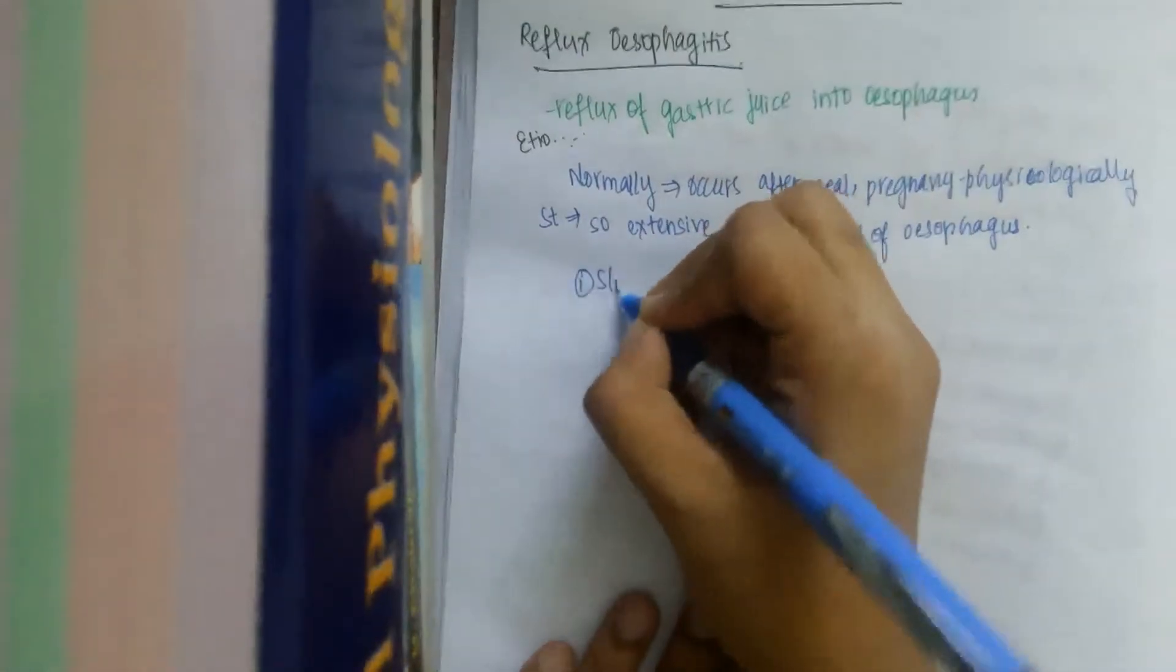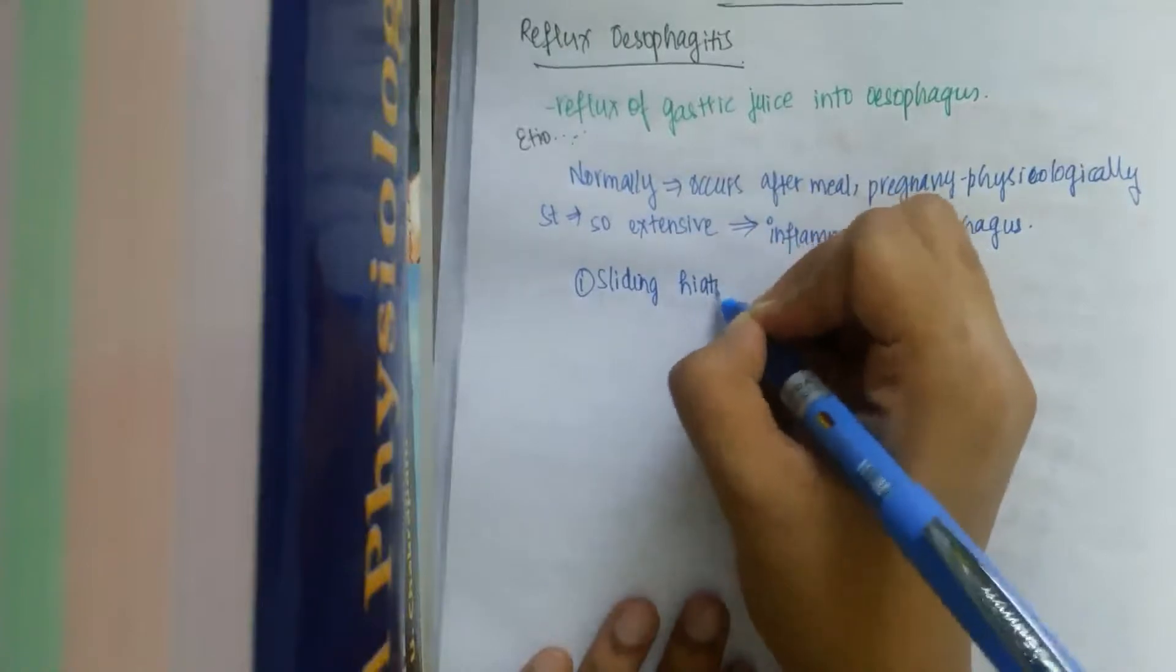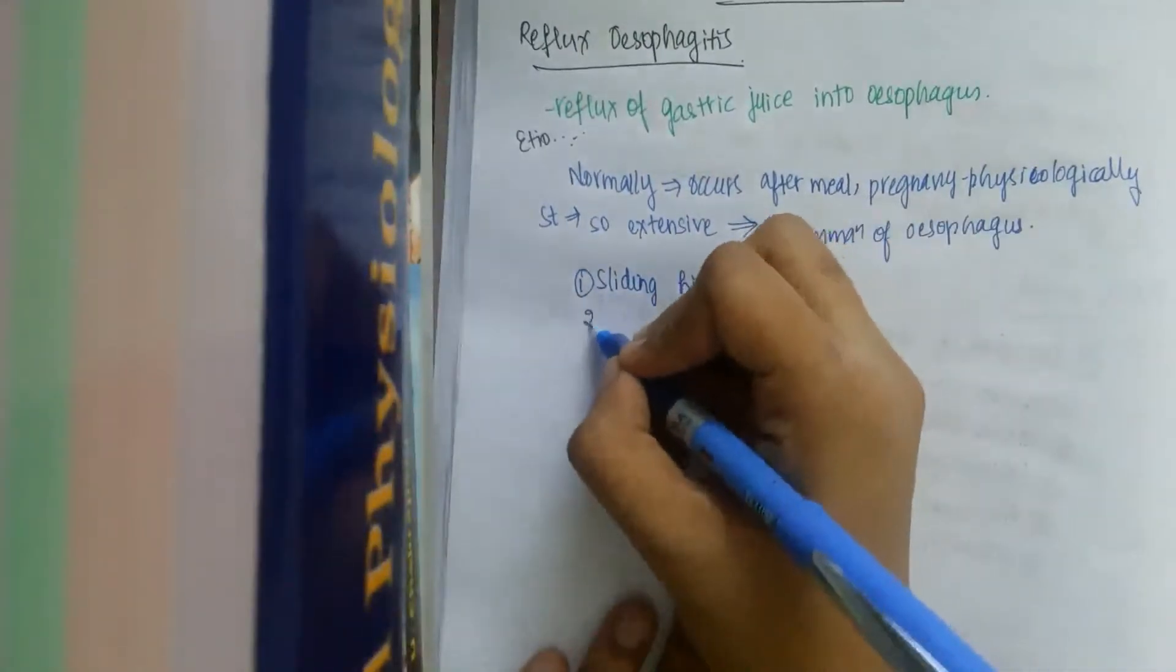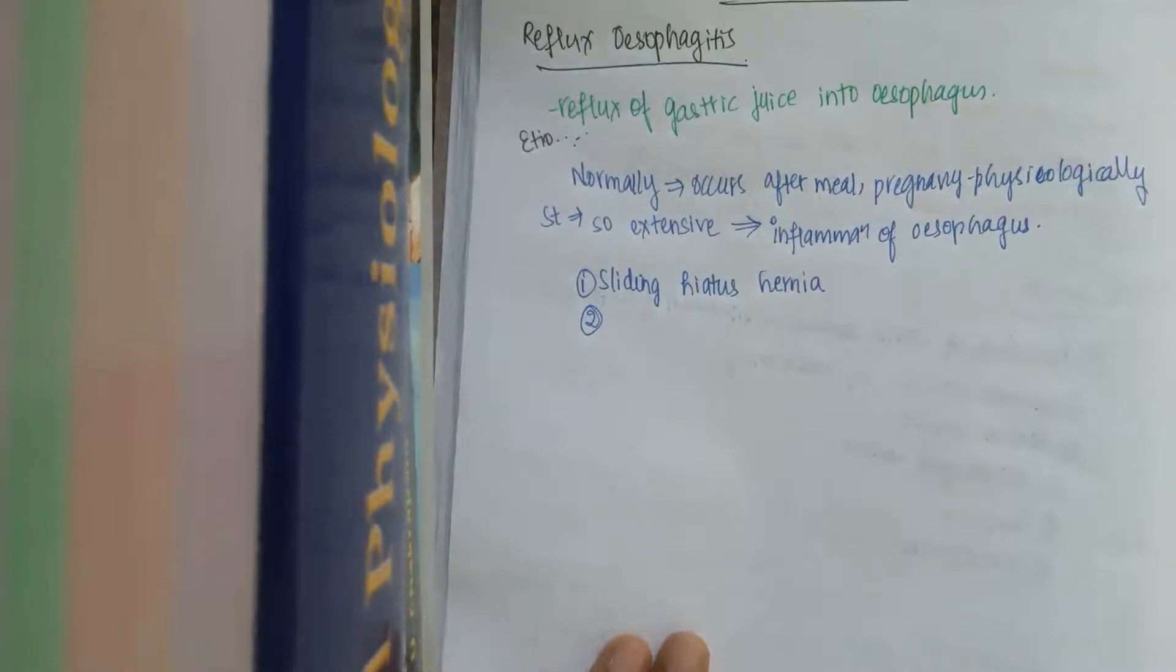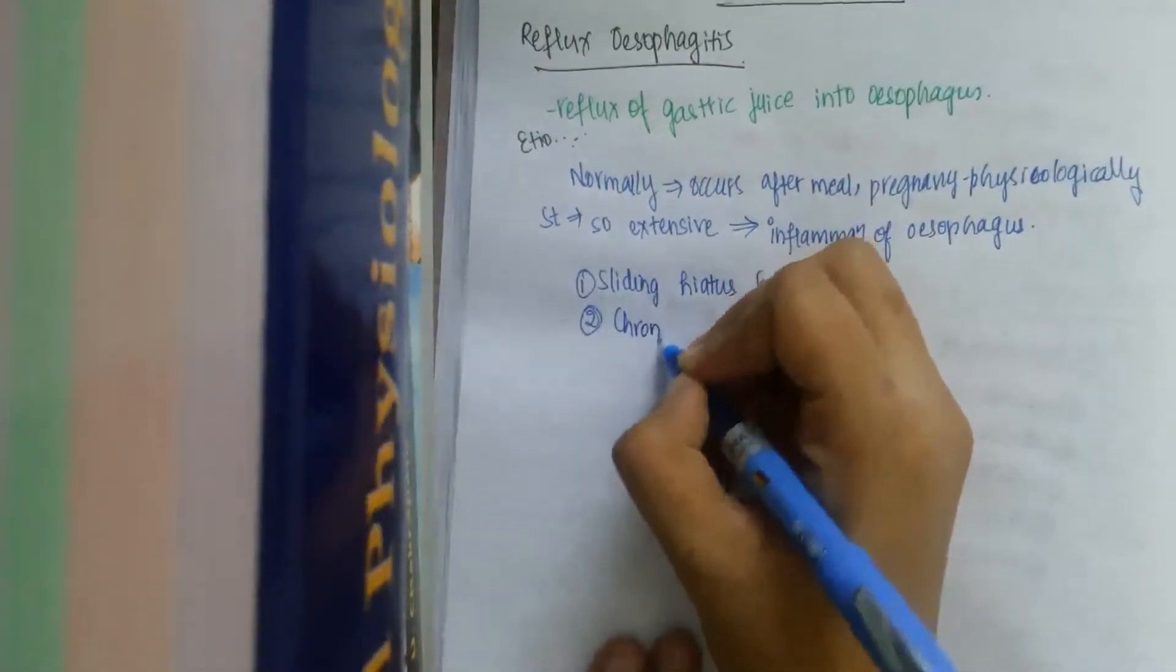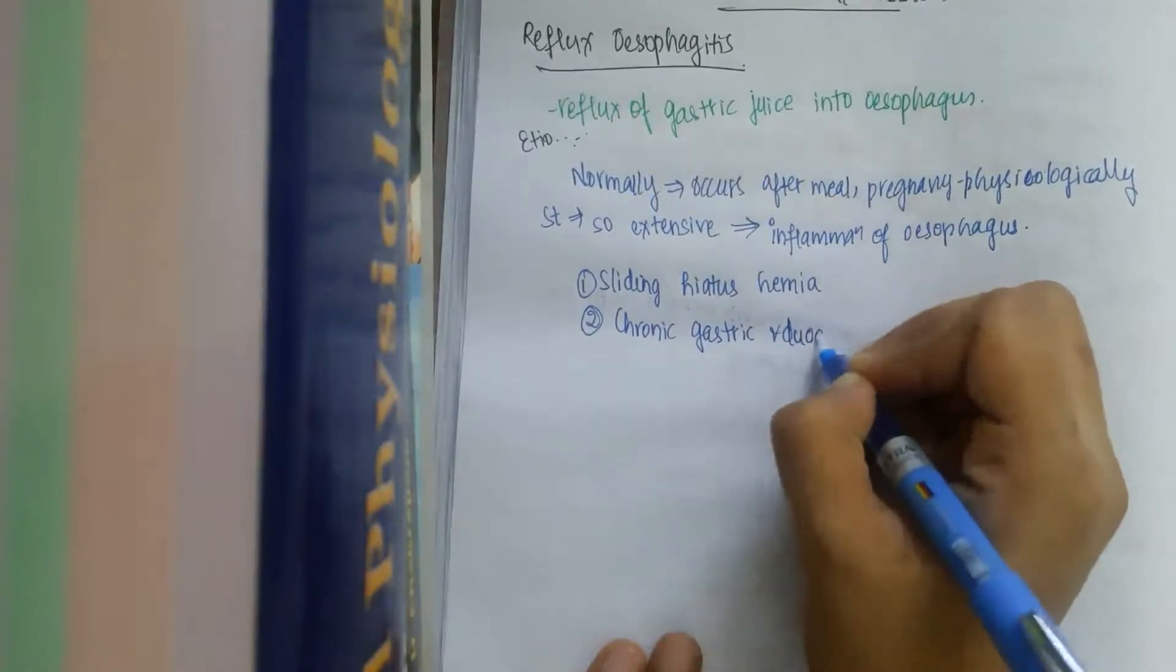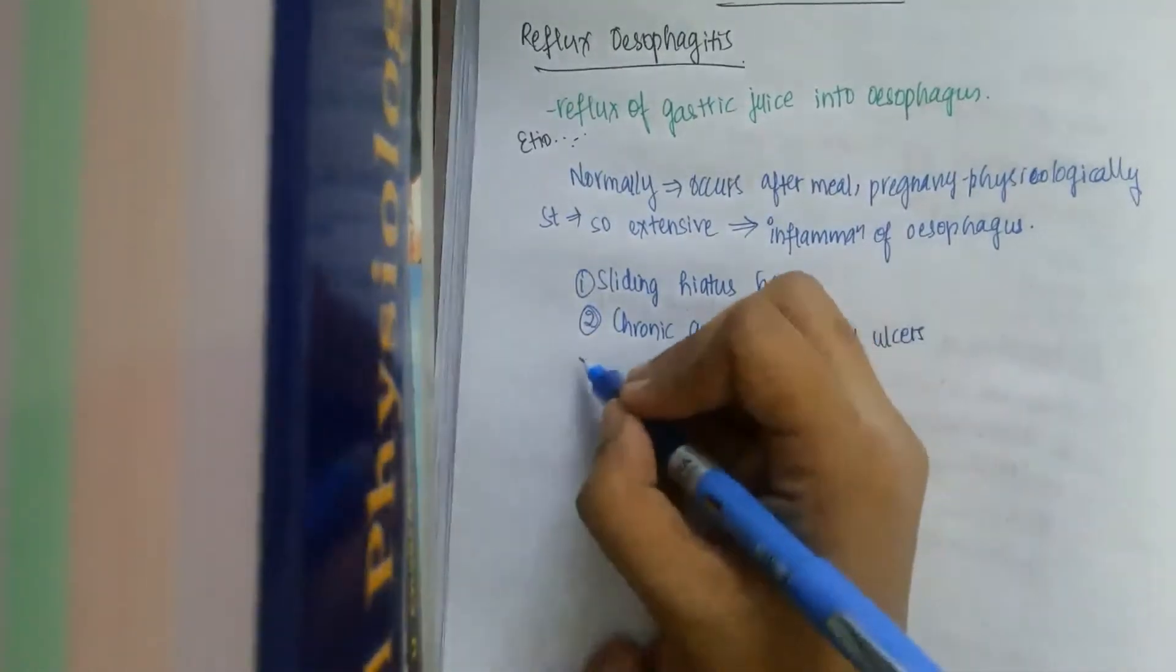First, there is sliding hiatus hernia. Because of this sliding hiatus hernia there is reflux esophagitis every time because the gastric part enters into the esophagus. The second one is chronic gastric and duodenal ulcers. Even in these areas there is reflux esophagitis.